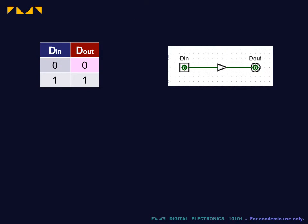This is the truth table and logic symbol for a buffer. In a buffer, the output Dout has the same value as the input Din.